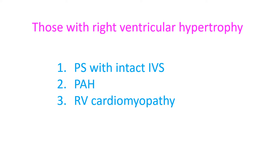If there is a ventricular septal defect, as in Tetralogy of Fallot, right and left ventricular pressures equalize, and right ventricular pressures cannot become suprasystemic in the presence of a non-restrictive ventricular septal defect. Hence, the right ventricular hypertrophy is not severe enough to produce right atrial overload and prominent A waves in JVP.